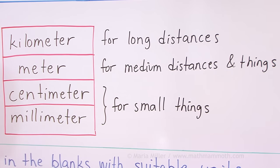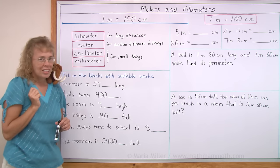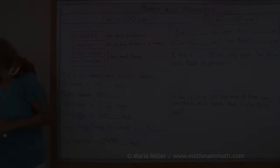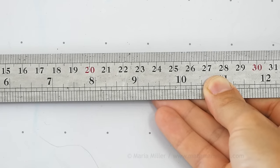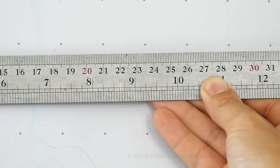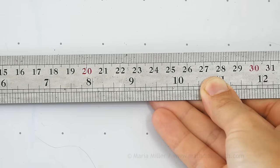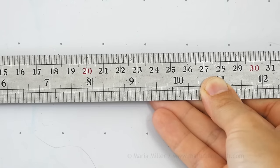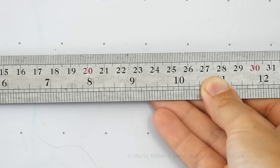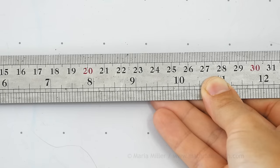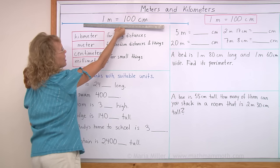Centimeters you know about, those are the little units for small things. And then millimeters, do you remember those? Let me show you. Here's another ruler and it has centimeters here on the top. You see the numbers 20, 21, 22 and so on, right? And each centimeter is divided into 10 little pieces, 10 parts. And those little parts are the millimeters. So they are really tiny.